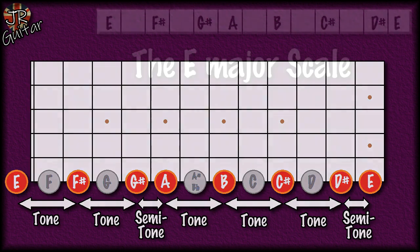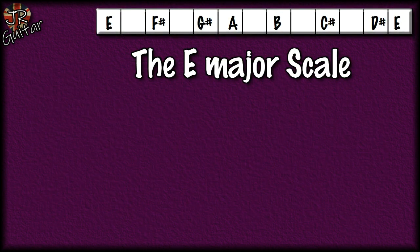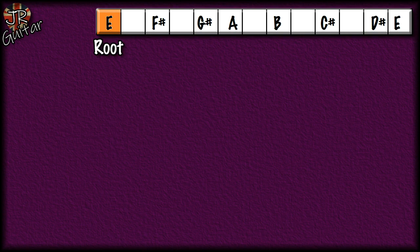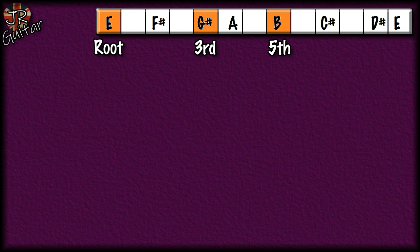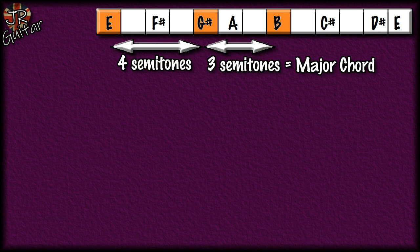Now we're going to use that scale to build some chords. We take the root note of the scale, skip the second and go to the third note, then skip the fourth and go to the fifth — so we're taking root, third and fifth. From the note E, that gives us E, G# and B. The interval from E to G# is four semitones, and from G# to B is three semitones. Any chord built by stacking four semitones then three semitones is always a major chord — giving us an E major chord.